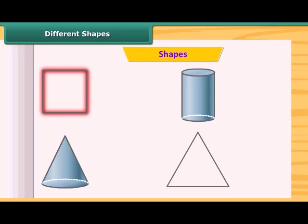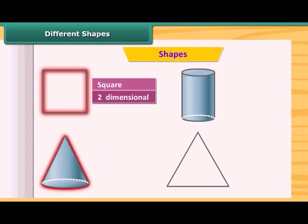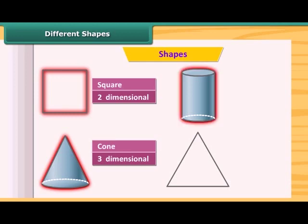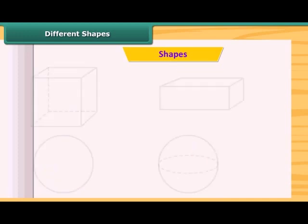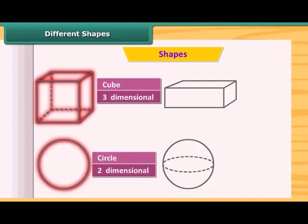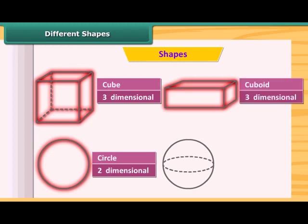This is a square and this is two-dimensional. This is a cone and is three-dimensional. This is a cylinder, this is also three-dimensional. This is a triangle and this is two-dimensional. Circle, two-dimensional. This is a cuboid and is three-dimensional. And this is, is it a sphere? Yes, this is a sphere and is three-dimensional.